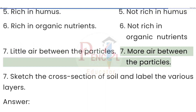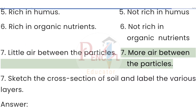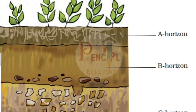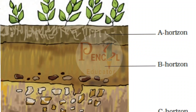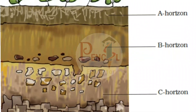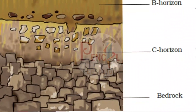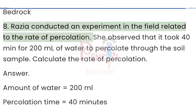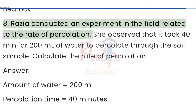Sandy soil: (1) particles are larger, (2) particles are loosely packed, (3) water holding capacity is low, (4) it is light in weight, (5) not rich in humus, (6) not rich in organic nutrients, (7) more air between the particles. Question 7: Sketch the cross section of soil and label the various layers. Answer: The cross section of soil shows A horizon, B horizon, C horizon, and bedrock.